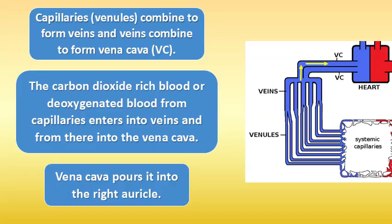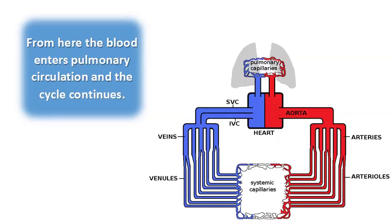The vena cava pours the deoxygenated blood into the right auricle. From here, the blood enters pulmonary circulation and the cycle continues.